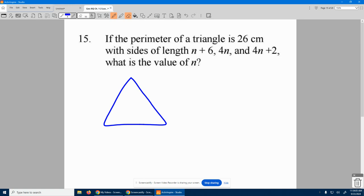So we have some triangle. We know all the way around it is 26. One side is n plus 6, one side is 4n, and the other side 4n plus 2. Two more than this guy.